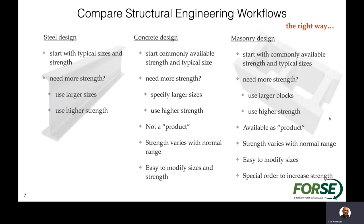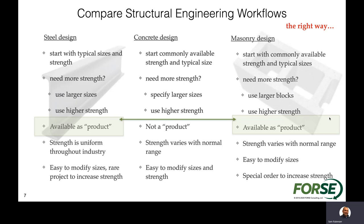Masonry is available as a product, similar to steel, with producers that make it. However, different from steel, masonry block strengths vary within different areas of the country due to different aggregates and mixes from different manufacturers — making it somewhat more similar to concrete. It's easy to modify sizes, and you can do a special order to increase strength. If you need more strength, increasing the actual design strength is something available for masonry. The goal is to elevate engineers' understanding of masonry design to bring it more in line with steel and concrete design.